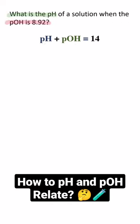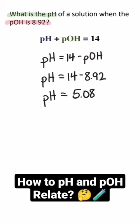With this in mind, we could solve for one of them if we know the other. Remembering that the pH plus the pOH is 14, I could subtract the pOH from both sides and solve for the pH. So 14 minus 8.92 gives a pH of 5.08.